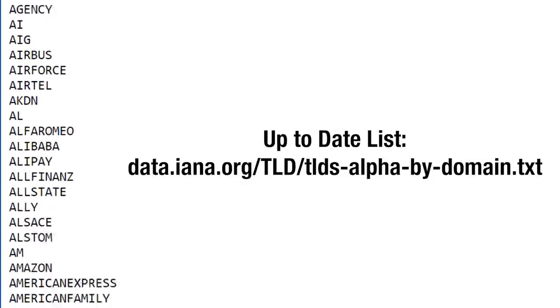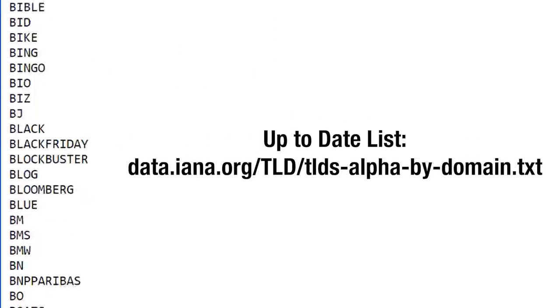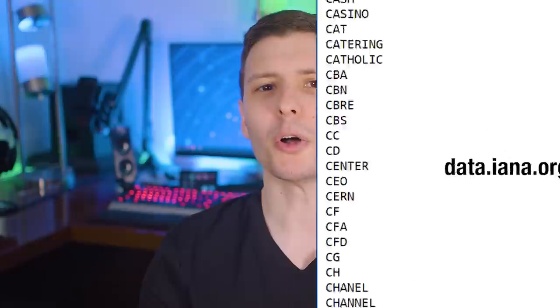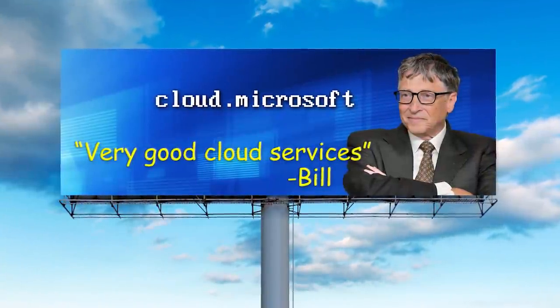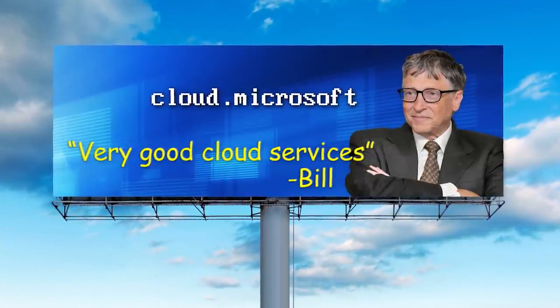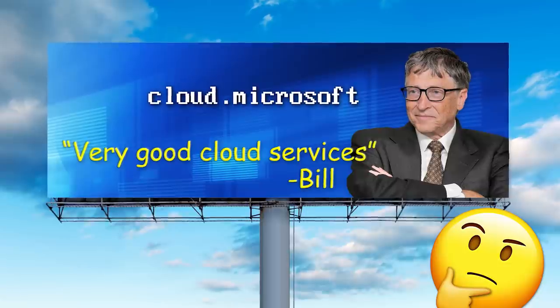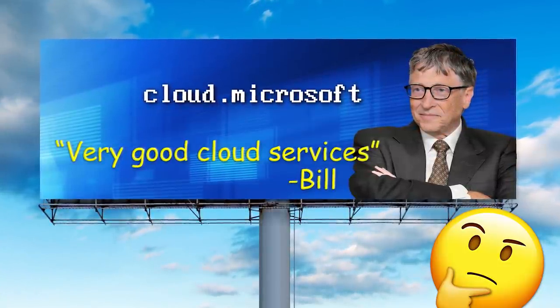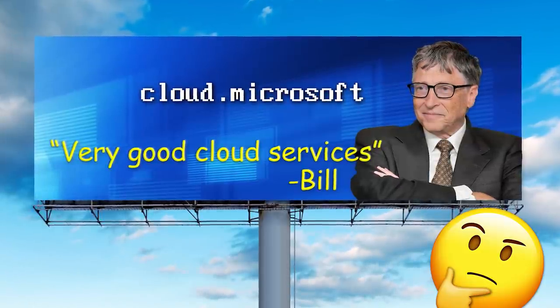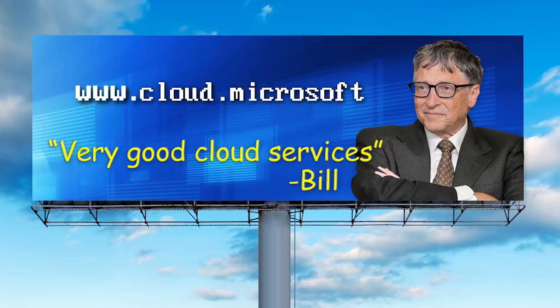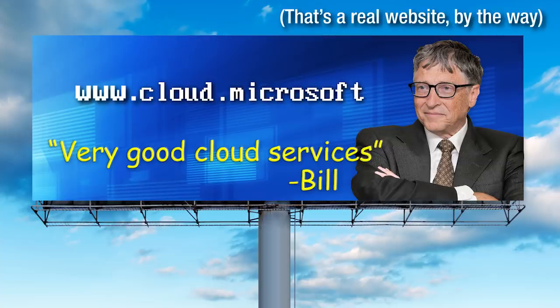If you want to look at the full list, you can view it on the IANA website — that's the Internet Assigned Numbers Authority — I'll put the link in the description. For the company top-level domains, those companies definitely have control over them, so it's not like you can just go out and buy a .Microsoft domain name — they would obviously not allow that. But my point is, if a company buys one of these unusual top-level domains and puts their site on a billboard — say Microsoft says 'visit us at cloud.Microsoft' — someone who doesn't know about these weird TLDs might not understand if it's a website or just some social media handle with a missing @. But if you put www.cloud.Microsoft, it makes it much more obvious that it is actually a website.